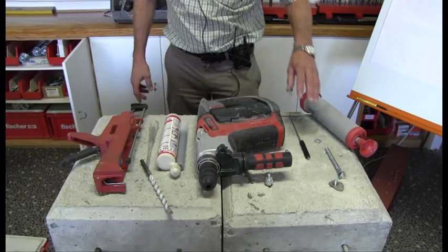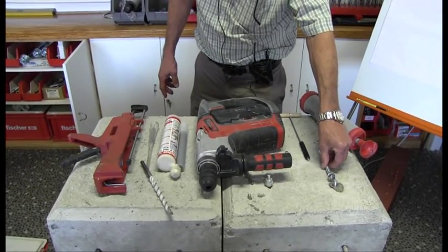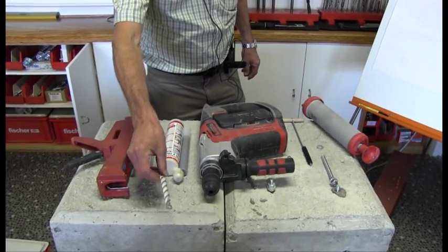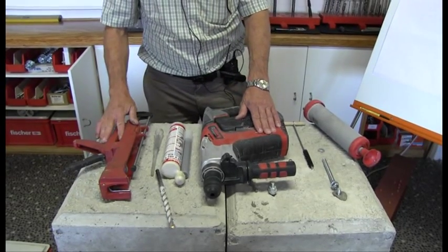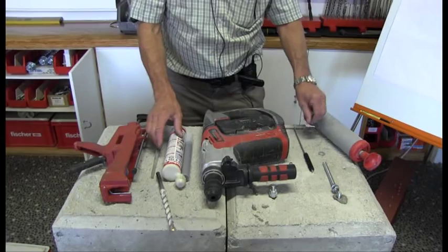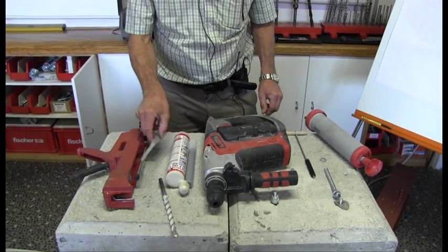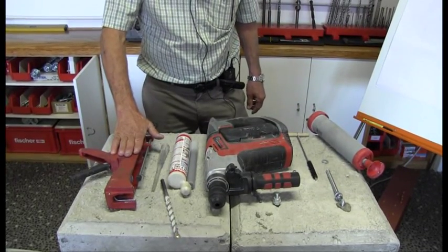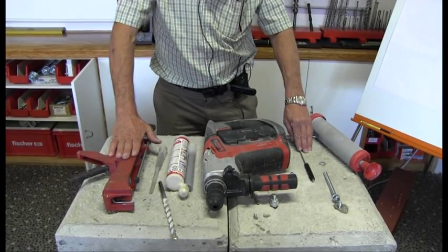What you will need is the concrete block, 10 millimeter stud, for 10 millimeter stud we use a 12 millimeter drill bit, high performance drill, the chemical itself FISV, a mixer nozzle, the application gun, and then for cleaning the hole we need a blowout bulb and a brush.